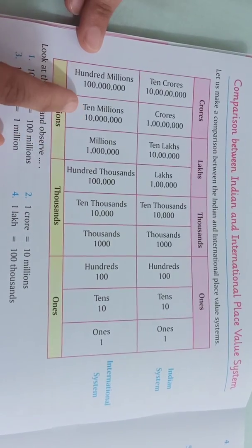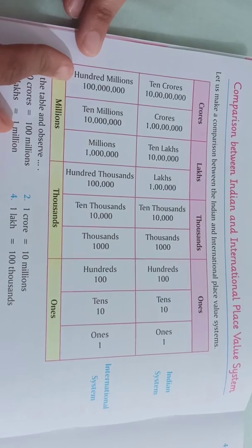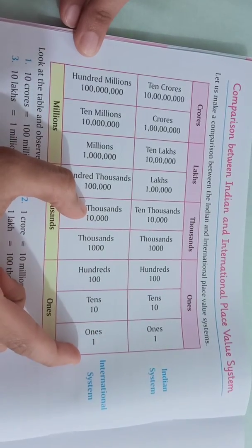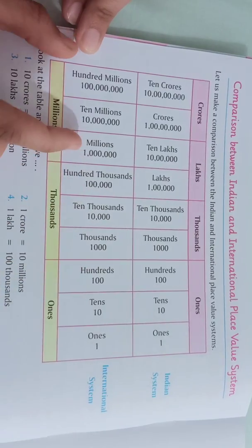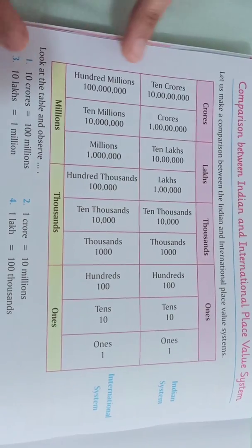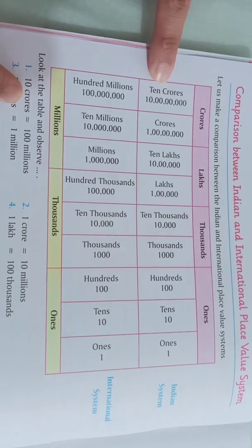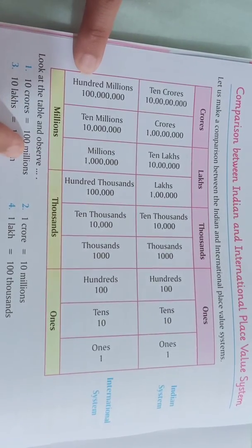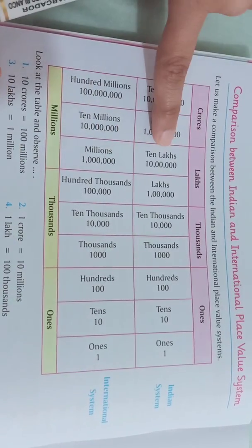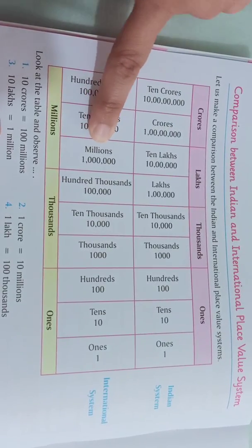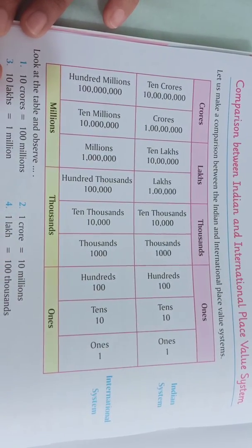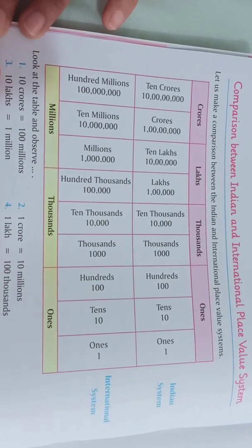From this table we observe that up to the first five places — up to ten thousand — there is no difference between the Indian and international systems. After that, changes occur. Ten crores equals hundred millions, one crore equals ten millions, ten lakhs equals one million, and one lakh equals hundred thousand. To learn and understand these values better, try to make this table yourself.